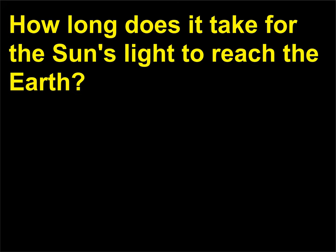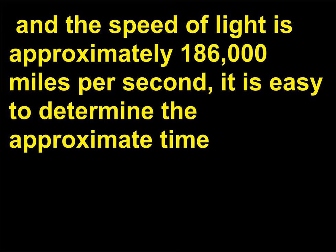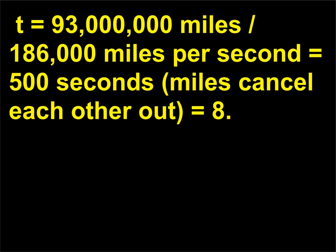How long does it take for the sun's light to reach the earth? T equals: the sun is 149,598,770 kilometers from the earth. The speed of light is approximately 186,000 miles per second, so it is easy to determine the approximate time T. T equals 93,000,000 miles divided by 186,000 miles per second equals 500 seconds — miles cancel each other out — equals 8 minutes.